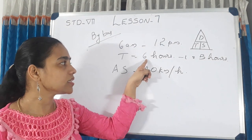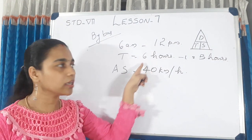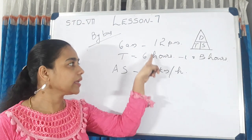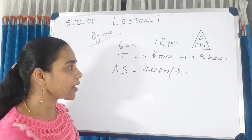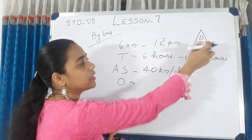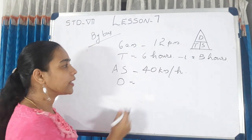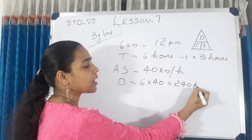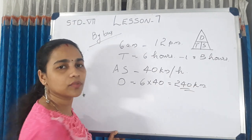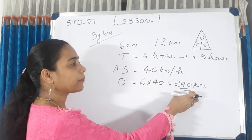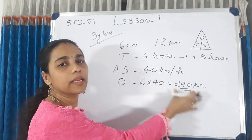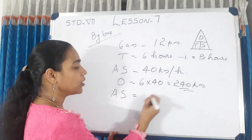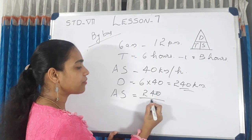The time is 6 hours and the speed is 40 km per hour. So distance = time × speed = 6 × 40 = 240 km. To cover the same distance in 5 hours: new speed = 240 divided by 5 hours.